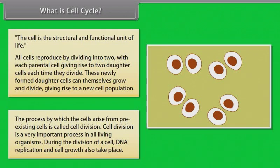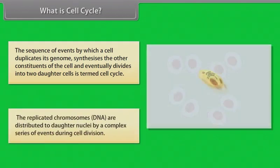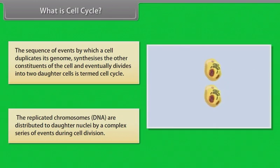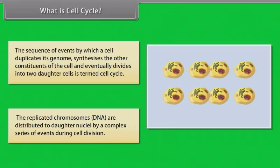During the division of a cell, DNA replication and cell growth also take place. The sequence of events by which a cell duplicates its genome, synthesizes the other constituents of the cell, and eventually divides into two daughter cells is termed cell cycle.